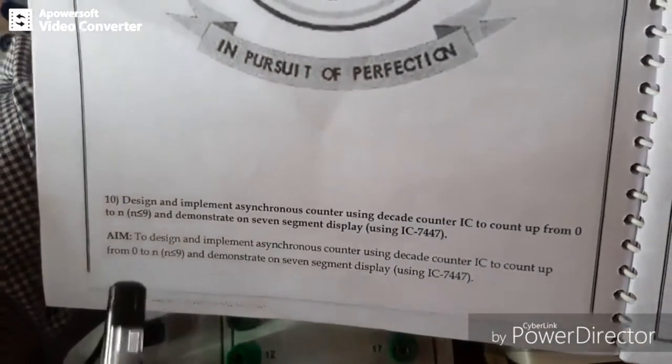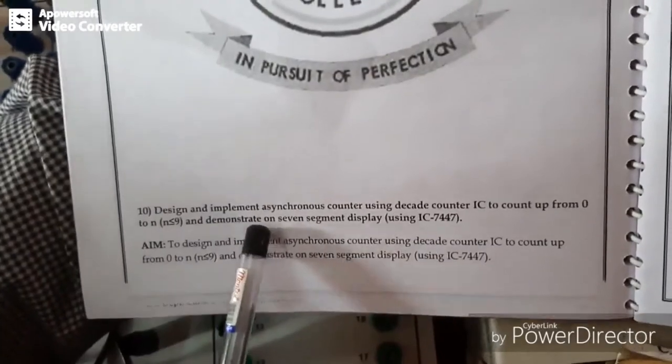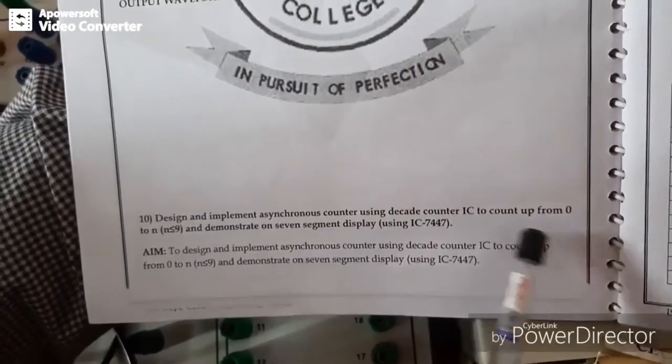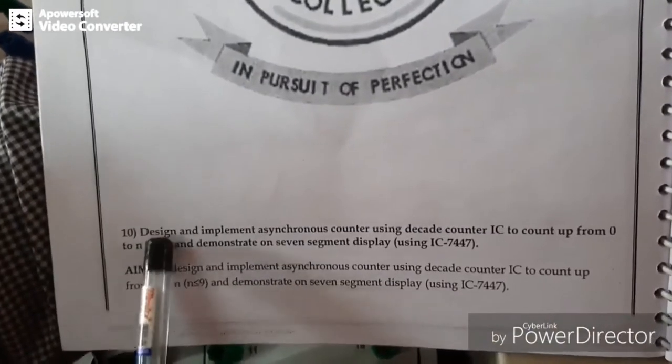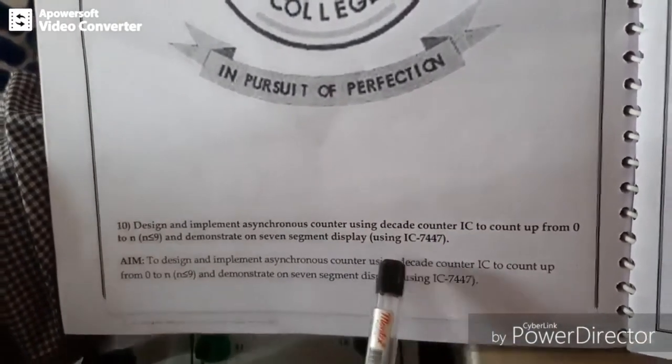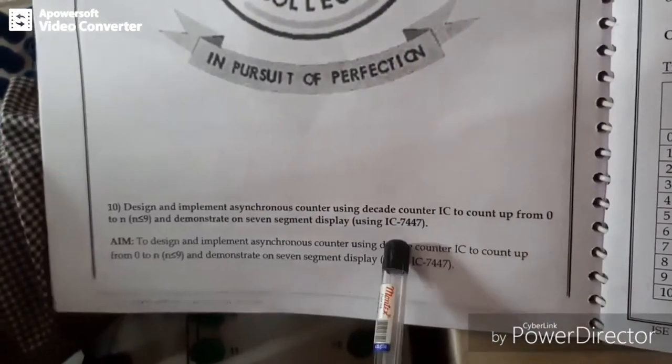The 10th experiment in your syllabus is to design and implement a synchronous counter using decade counter IC to count off from 0 to n, where n is less than or equal to 9, and demonstrate on the 7 segment display using 7447.